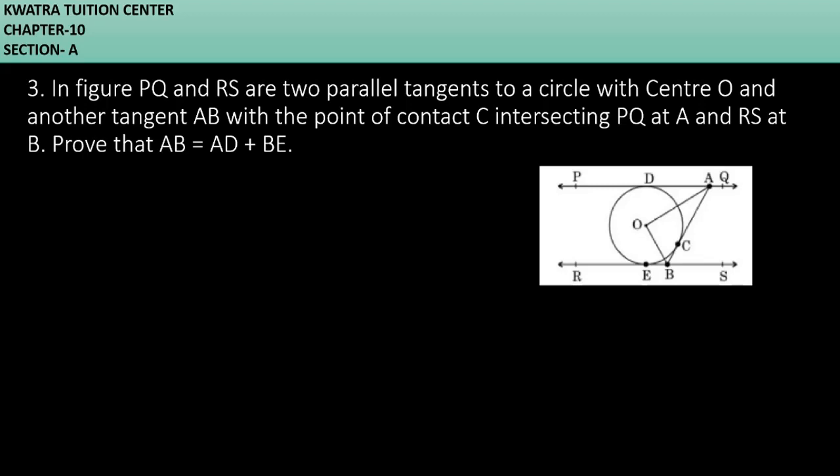Prove that AB is equal to AD plus BE. So you have information here that we have a circle and we prove that AB is equal to AD plus BE. Here you can see AB, this length is there and AB is equal to AD plus BE.